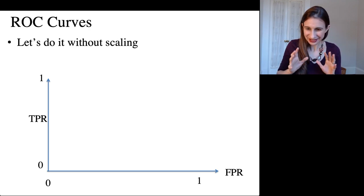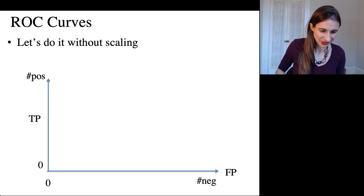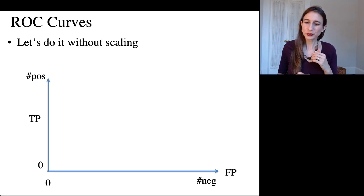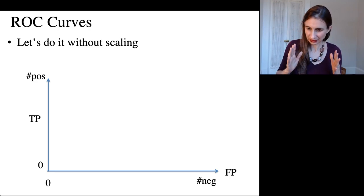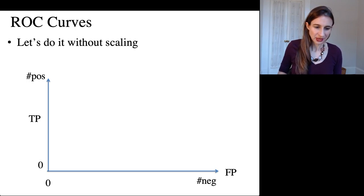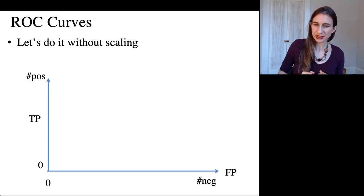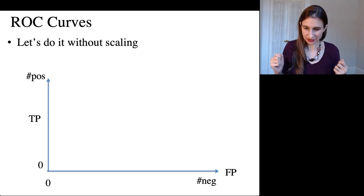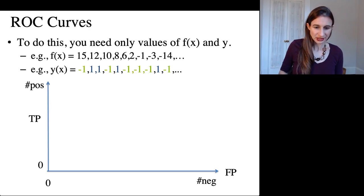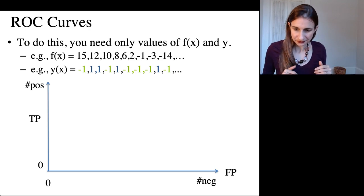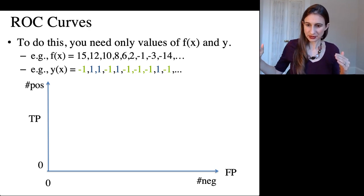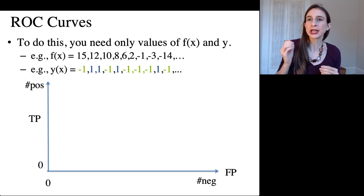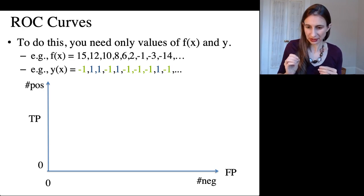So here I have true positives along the vertical axis and then false positives along the horizontal axis. So I'm counting positives going upward and I'm counting negatives going across. So here's what I'm going to do. I'll take all of my function values and I'm going to order the labels by those function values.